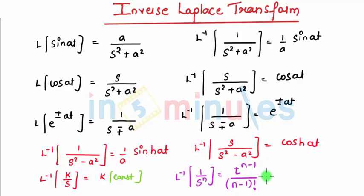Students, we know we will be using factorial when n will be integer. If n is a rational number, I will be using t raised to n minus 1 divided by gamma of n.